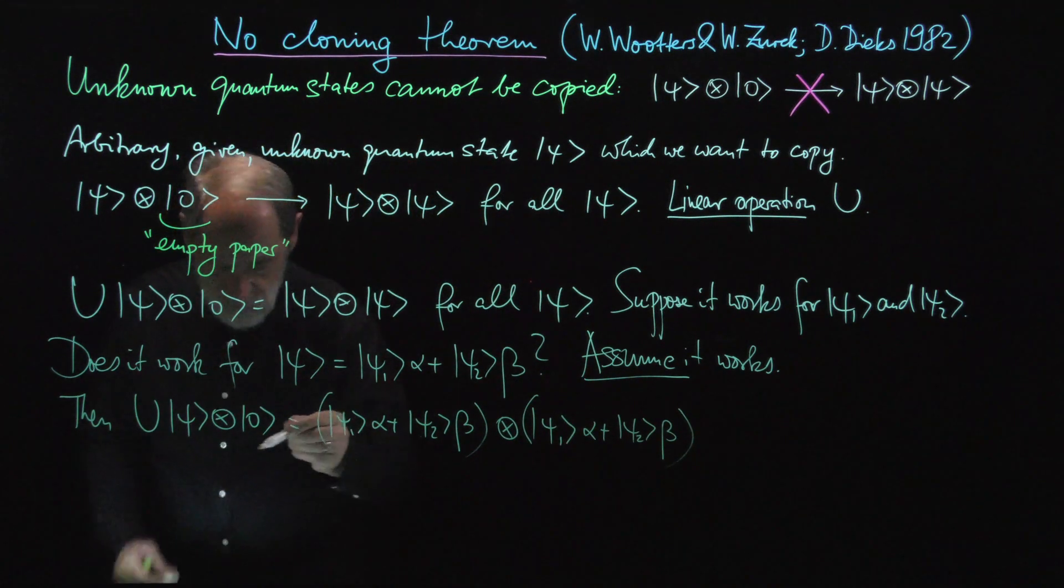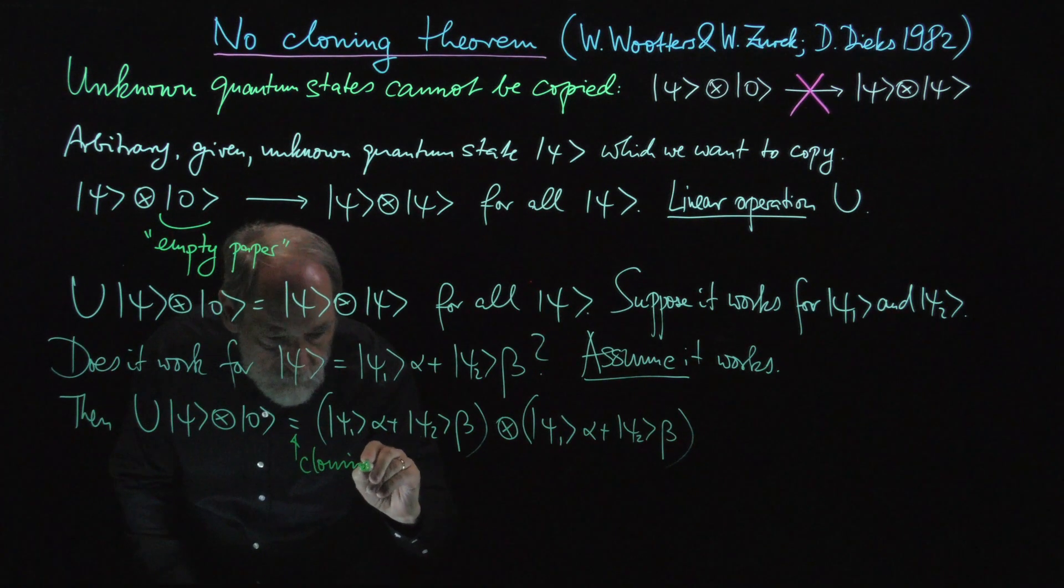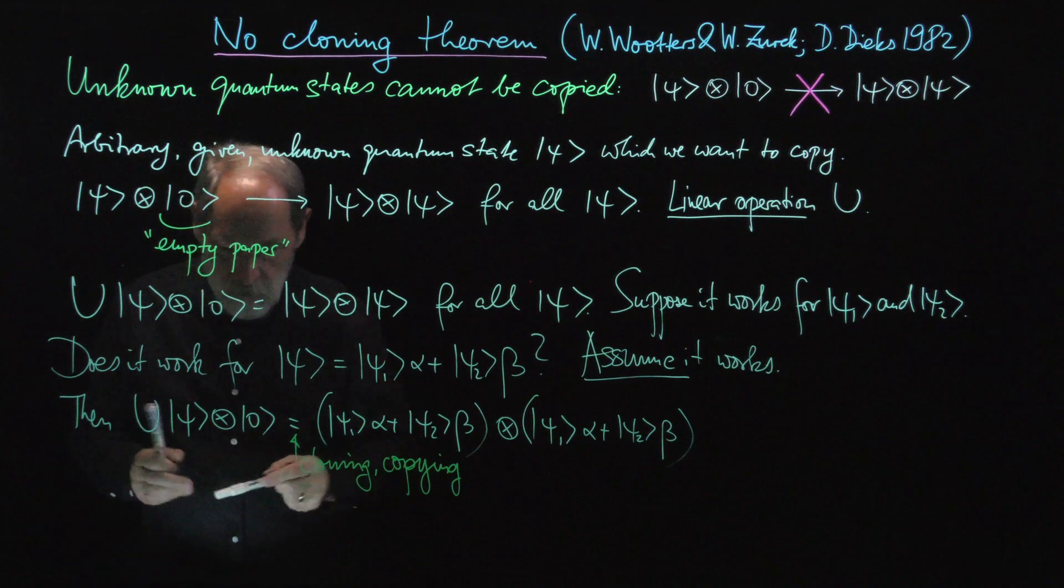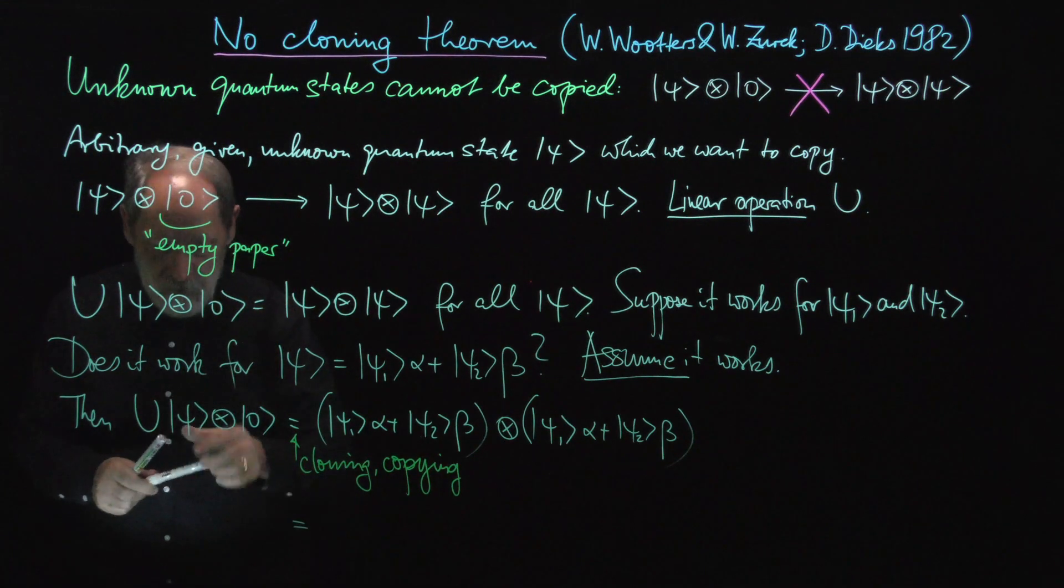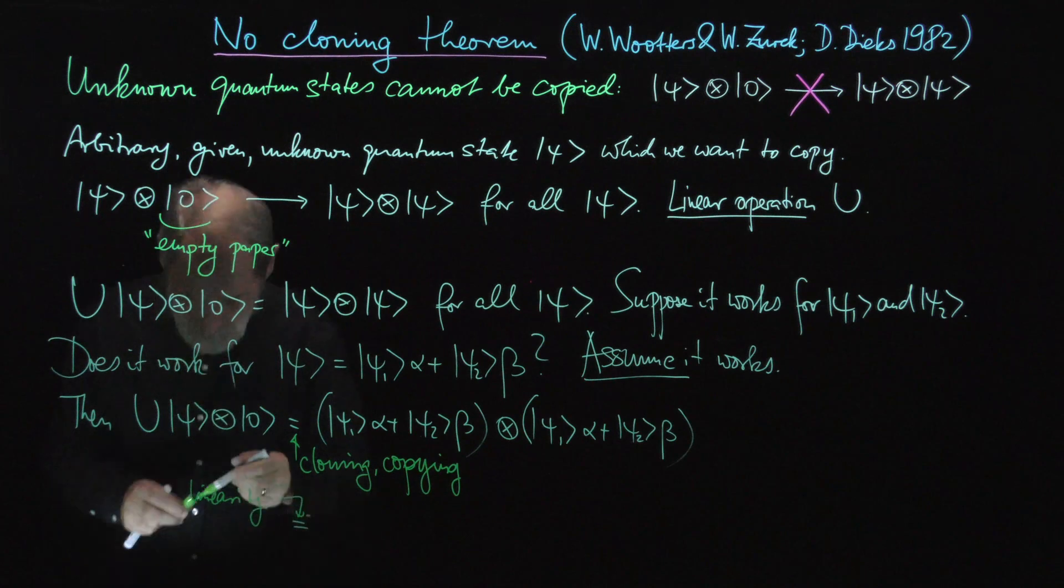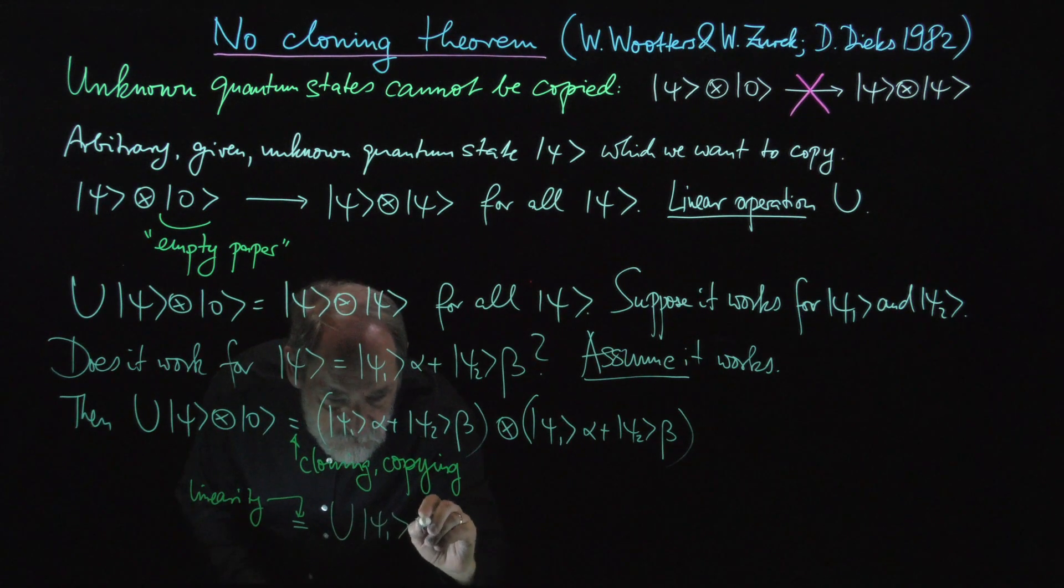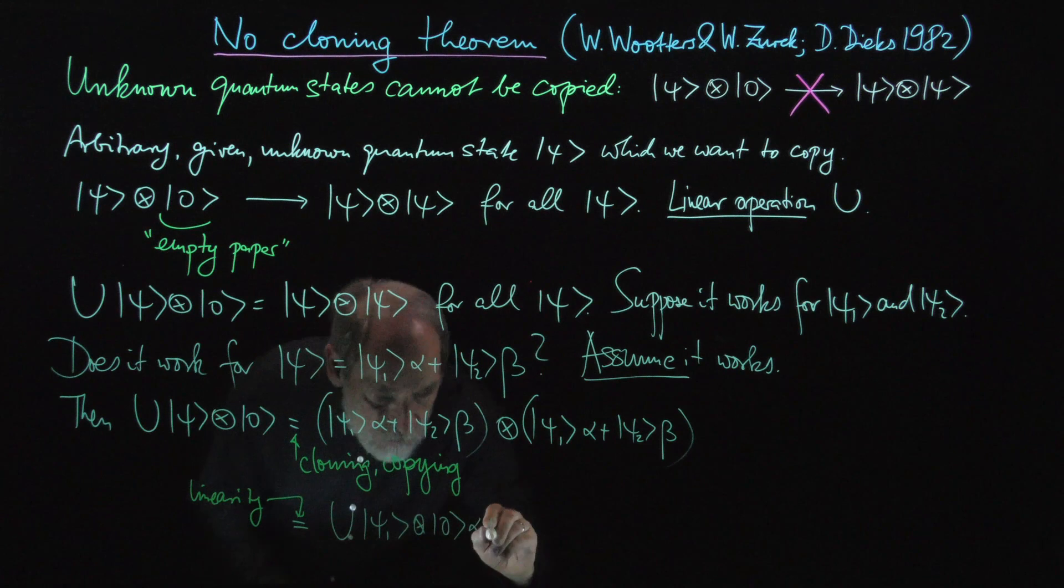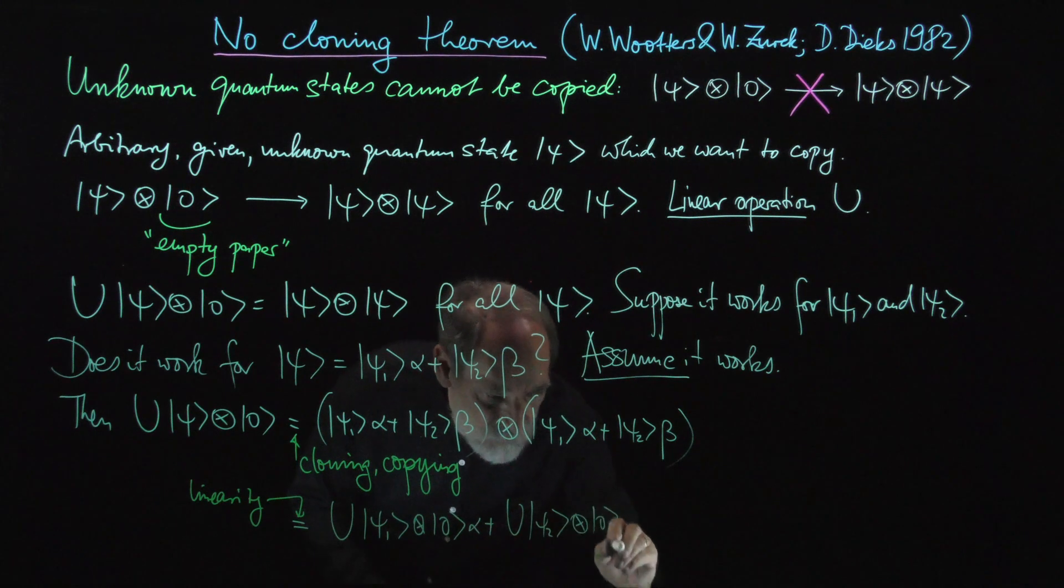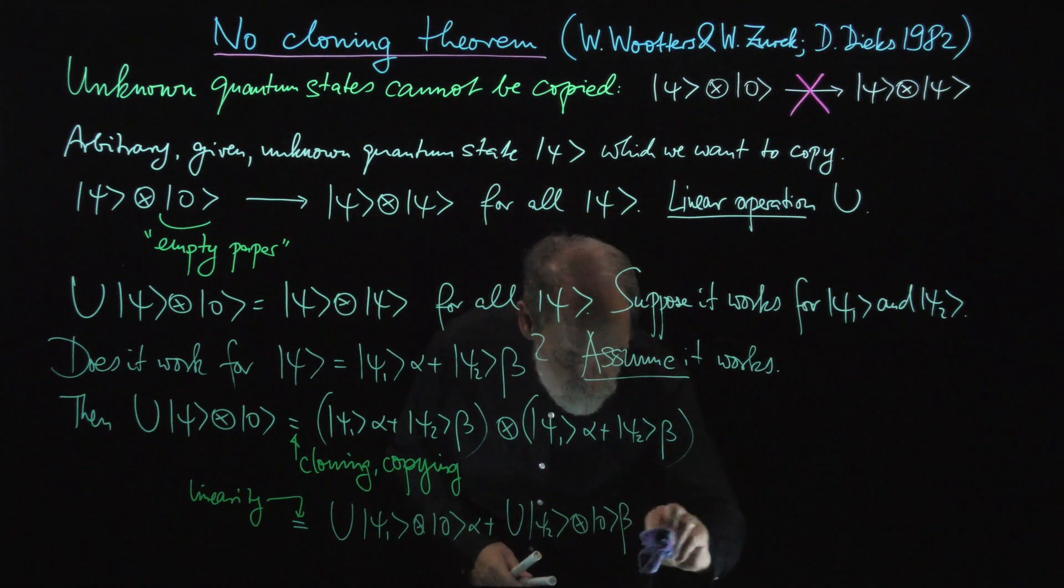But because of the linearity, so this here is the cloning, the copying. But then we can also argue with the linearity. The linearity says that this has to be the same as U applied to psi one tensor zero times alpha plus U applied to psi two tensor zero times beta. And now we apply the cloning here.